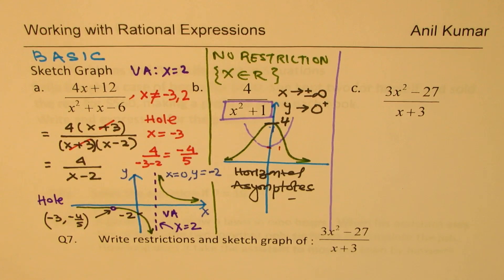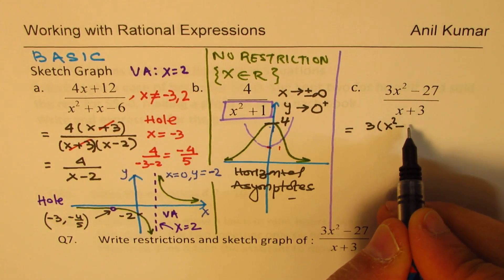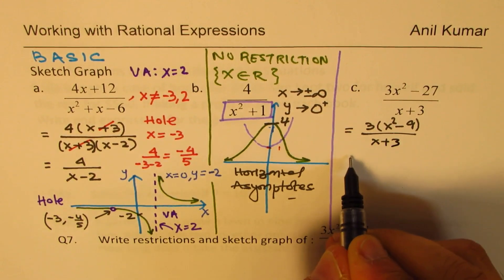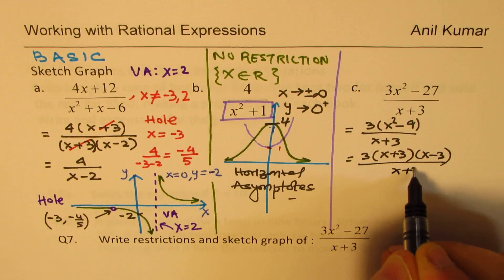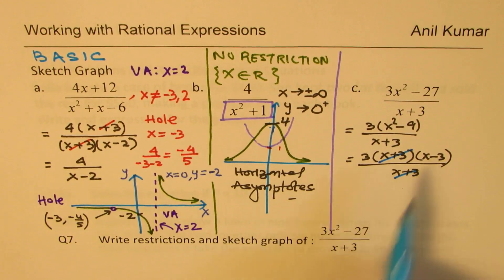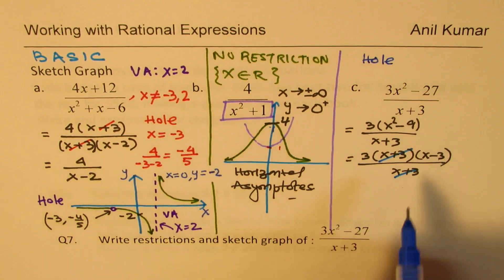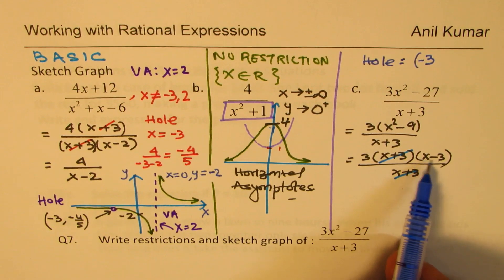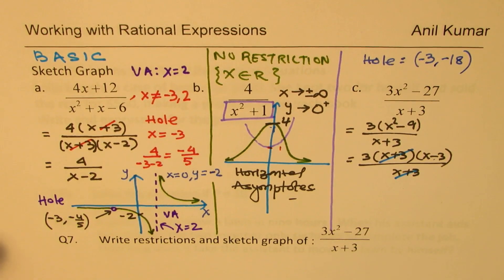The last one you should try on your own, but here is a quick solution. 3 is a common factor in the numerator, and x² - 9 is a difference of squares, giving (x + 3)(x - 3). So the expression becomes 3(x + 3)(x - 3) / (x + 3). We have a hole but no vertical asymptote — it simplifies to a straight line. The hole is at x = -3, and substituting gives 3(-3 - 3) = 3(-6) = -18.